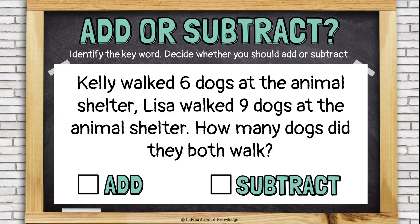Kelly walked six dogs at the animal shelter. Lisa walked nine dogs at the animal shelter. How many dogs did they both walk? When we see the word 'both,' it tells us that we need to put the number of dogs Kelly walked together with the number of dogs Lisa walked. Both is an addition problem.